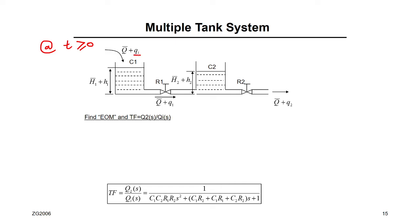As a result of this small deviation, there was a small deviation in the head in tank number 1 — I'll call it small h1. There was a small deviation in the flow inside valve number 1 — small q1. There was a small deviation in the head inside tank number 2 — h2. And a small deviation in valve number 2 — small q2. In this problem, small qi is my input and small q2 in valve number 2 is my output. Find the equation of motion in order to find the transfer function where the input is small qi and the output is small q2 in the S domain.